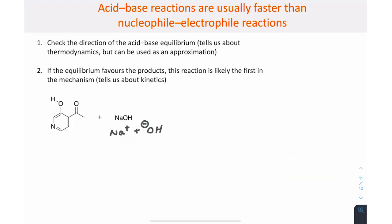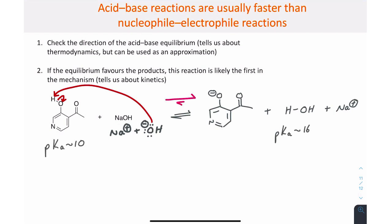The last thing to consider is that acid-base reactions are usually faster than nucleophile-electrophile reactions, as they involve kinetically quick and easy proton transfers. To decide if that's the case for a given situation, check the direction of the acid-base equilibrium. This equilibrium tells us about the thermodynamics, but can also be used as an approximation.